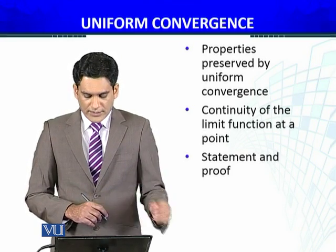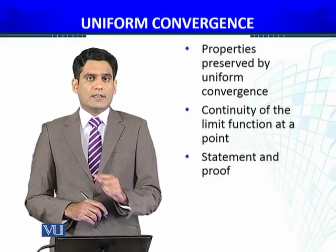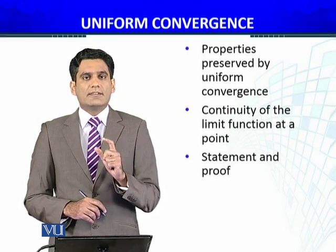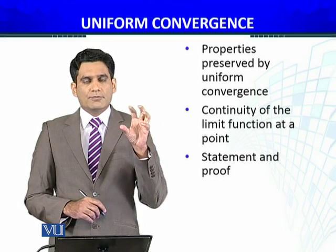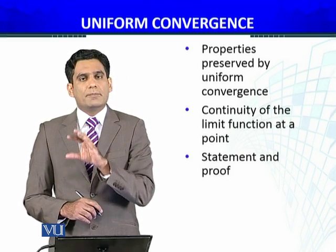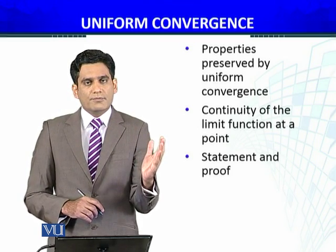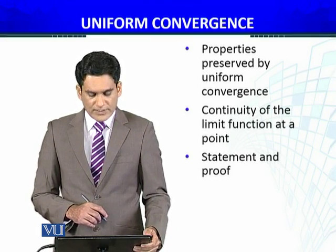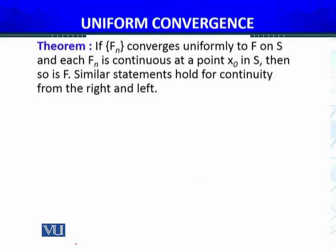The first property we will discuss is whether, if a sequence of functions is continuous at a particular point x equals x naught, is it necessary that the function to which the sequence converges is also continuous at x equals x naught? We will give the statement and proof. The first statement: if fn converges uniformly to f on S,